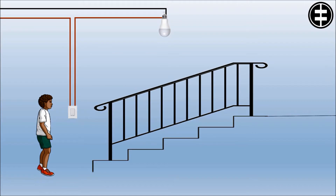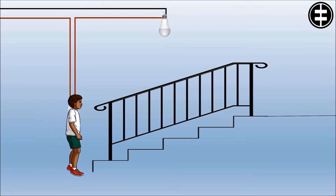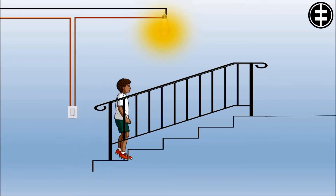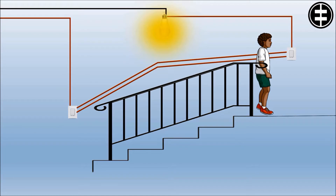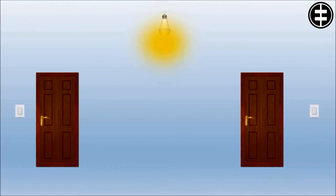Two-way switching is used to control a load like a lighting system from two different locations. For example, a person going upstairs needs to switch on the light from the bottom, and when reaching the top, keep the light on until going down again. Two-way switching allows this person to control the lighting from both ends, saving power and effort.